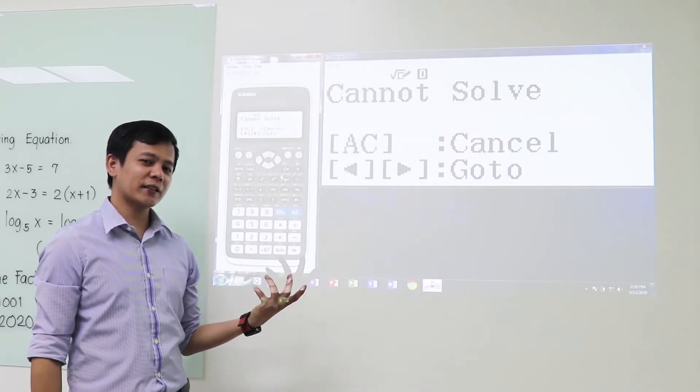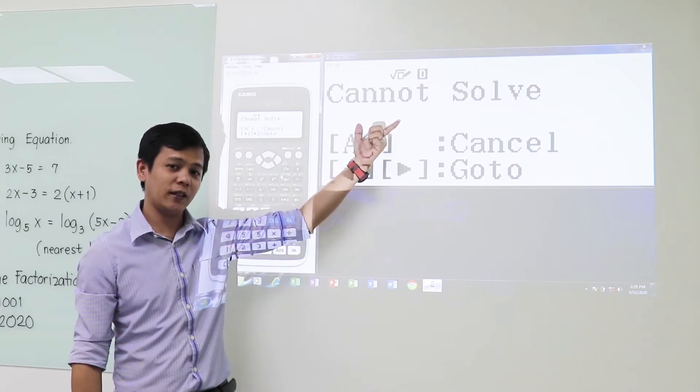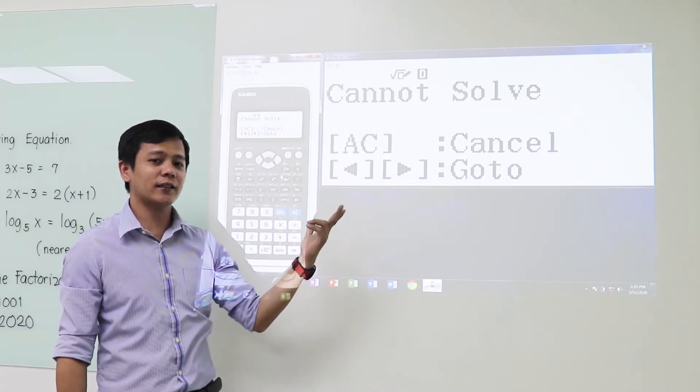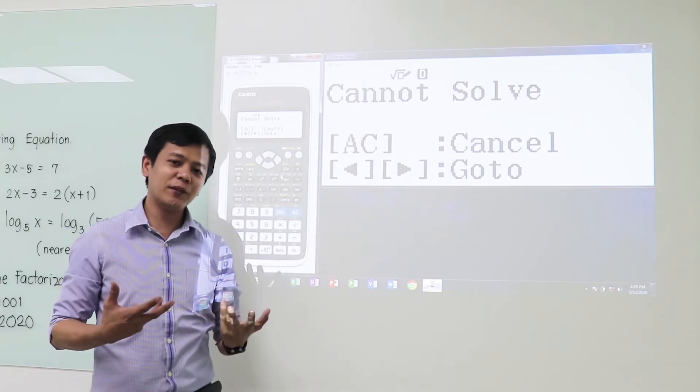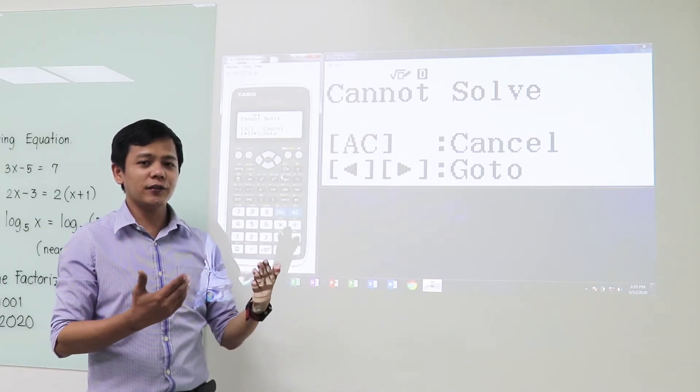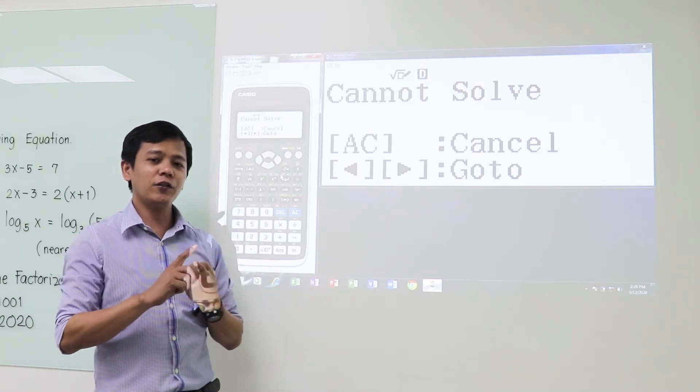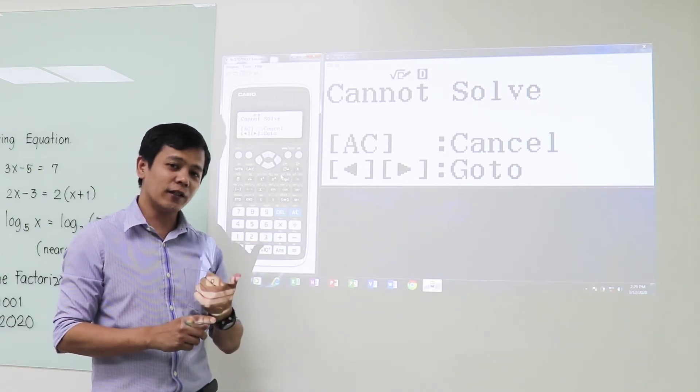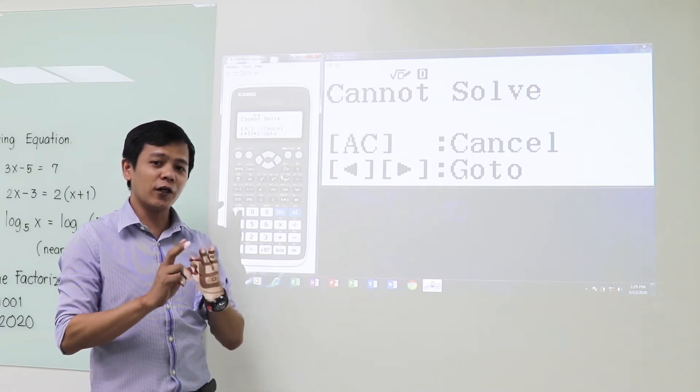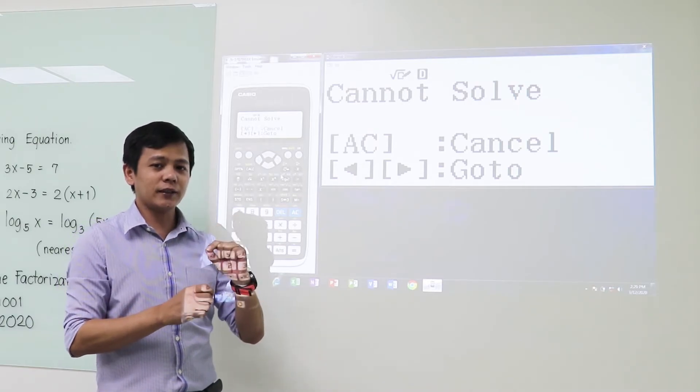Okay, so there are three possible answers that you can see or the screen will display if you will not be able to see the answer or the value for x. One is cannot solve, that simply means that the equation has no solution. The second one is the math error when you have something in indeterminate or undefined form. And the last one is syntax error when you wrongfully press a key or when you misplace a parenthesis in the equation.